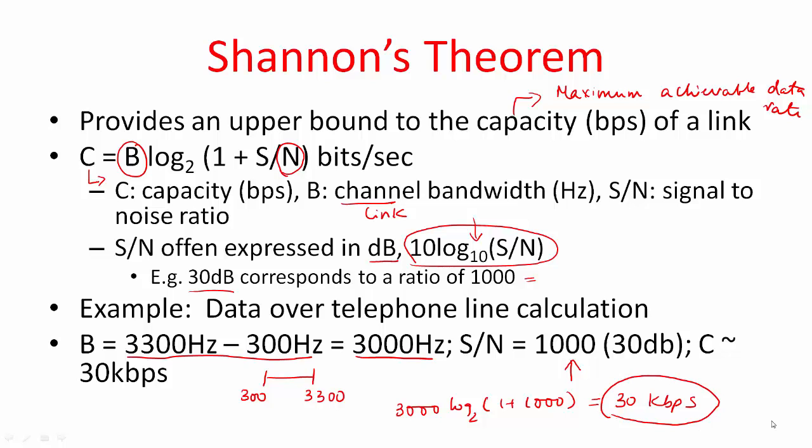By the way, that is the maximum achievable rate. Now I know some of you who have used telephone modems will say, hey I have achieved 56 kbps. Now is Shannon wrong? Definitely not. Why do you think you were able to achieve 56 kbps?